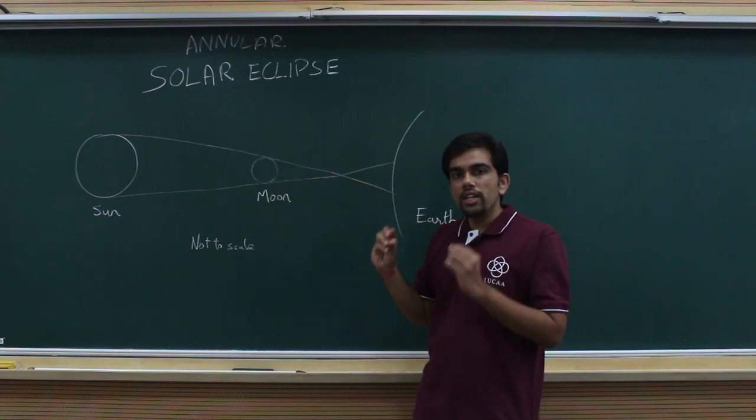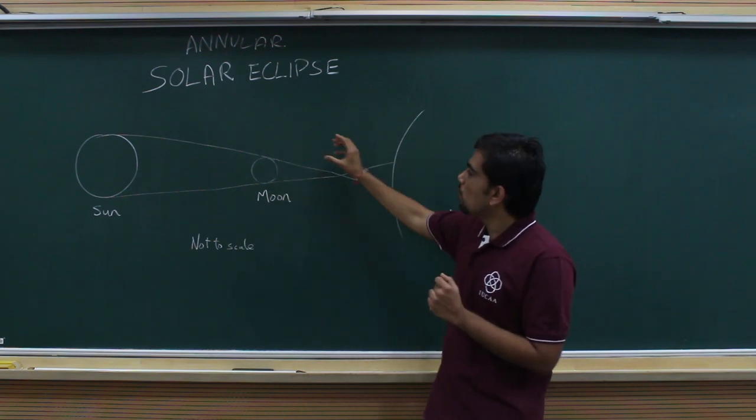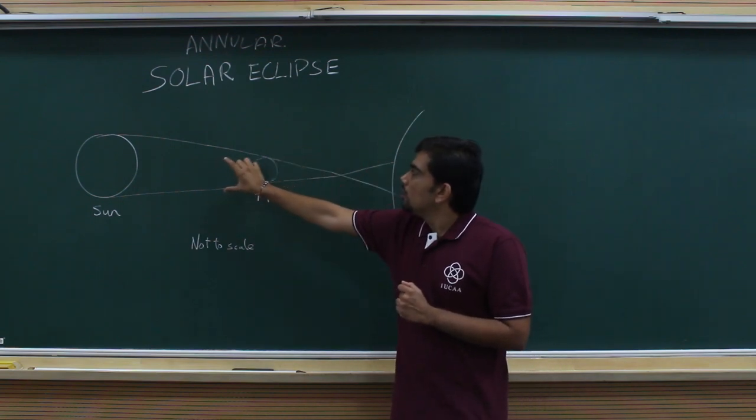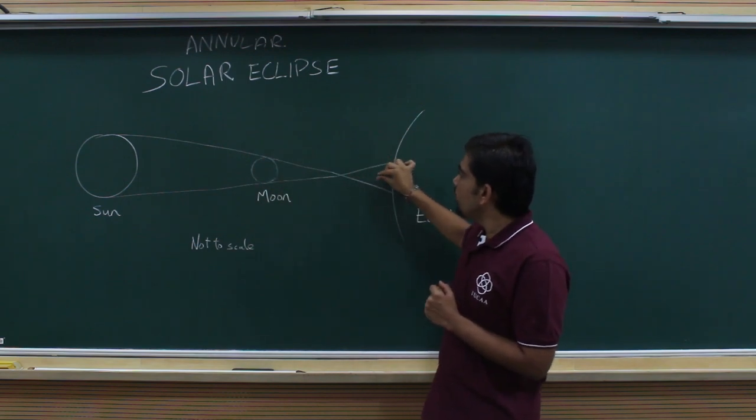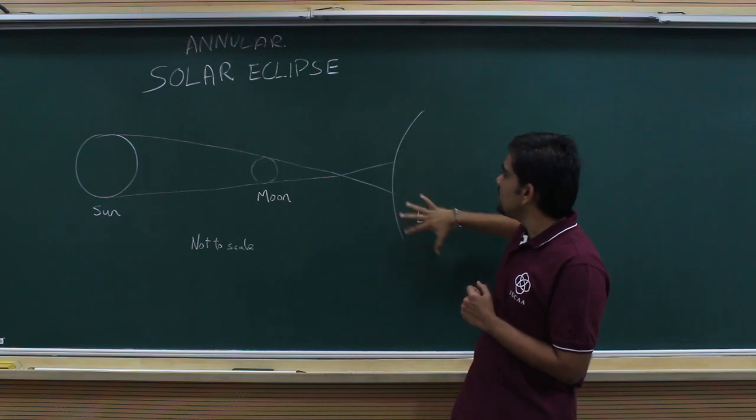Since the size of the moon is very small compared to the Sun and the Earth, the rays which make a cone actually make a cone on a very small fraction of the Earth, as you can see in the diagram.